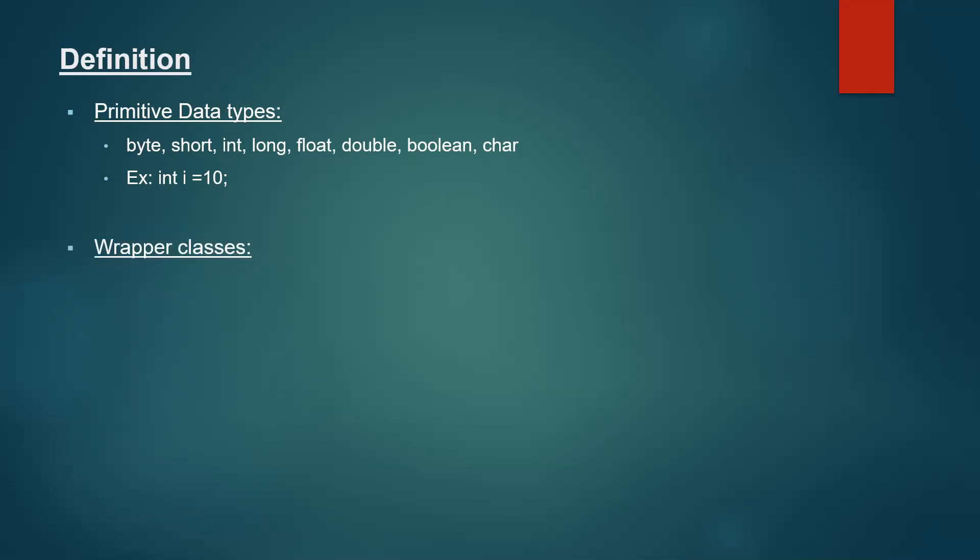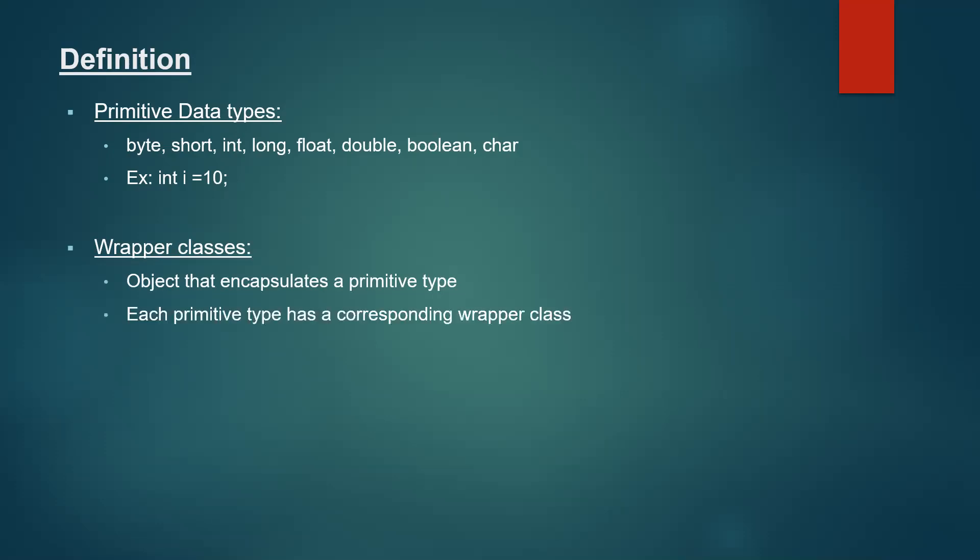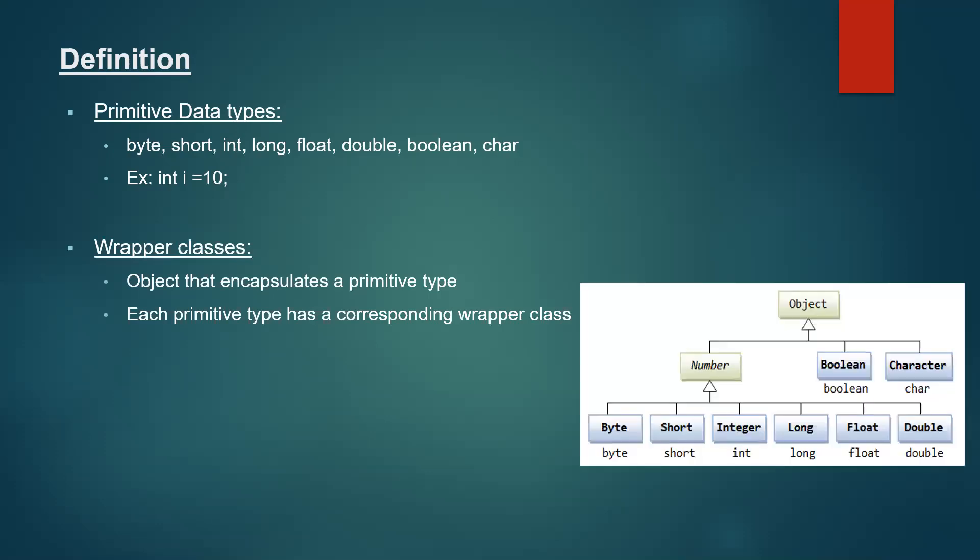Now let us understand what a wrapper class is. A wrapper class is an object that encapsulates a primitive type. Encapsulating the features of the primitive data type is what we call a wrapper class. Each primitive data type has its own corresponding wrapper class.